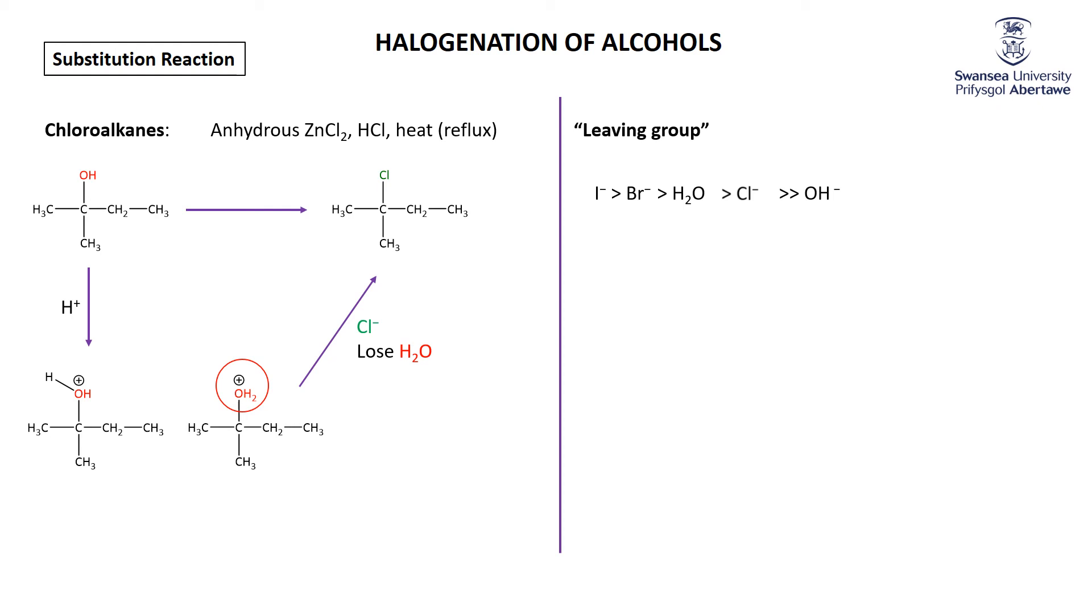If it's a tertiary alcohol, you lose the water to make the carbocation, then add in the chloride. Conversely, if it's a primary alcohol, this goes via an SN2 mechanism where chloride comes in with backside attack, water leaves in a concerted one-step process.